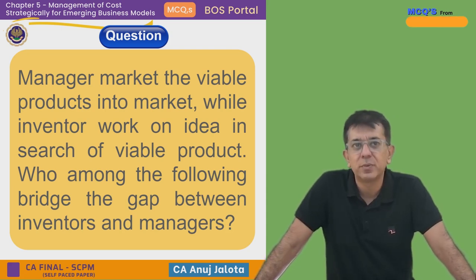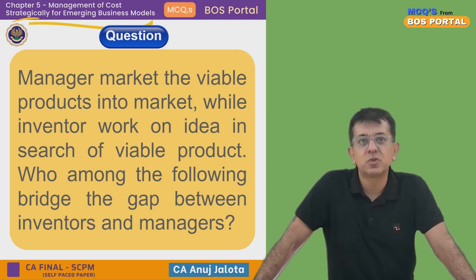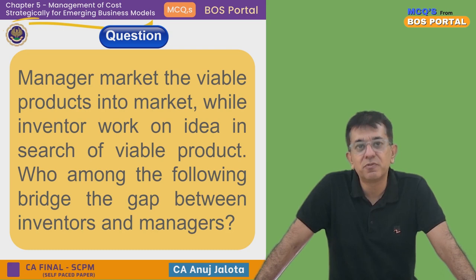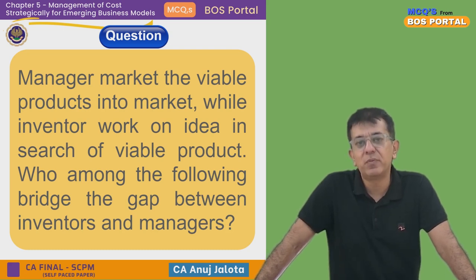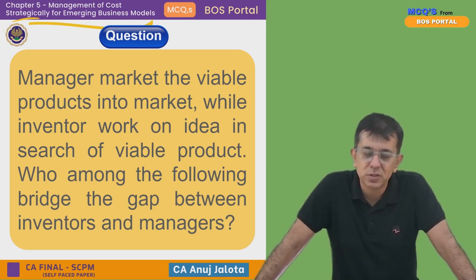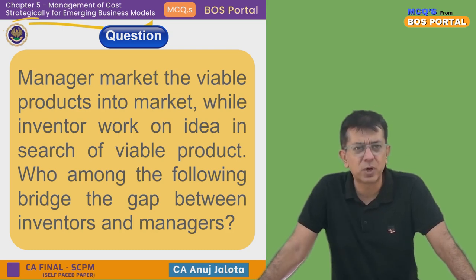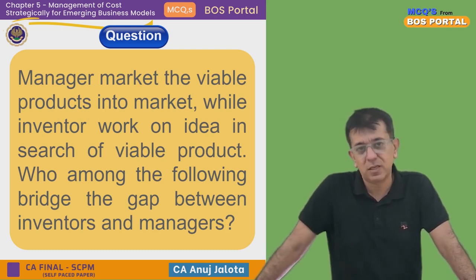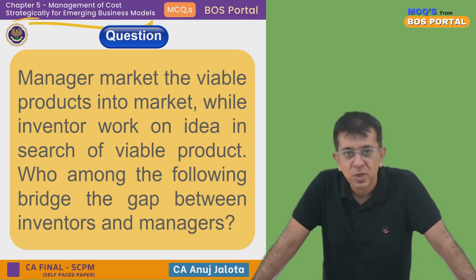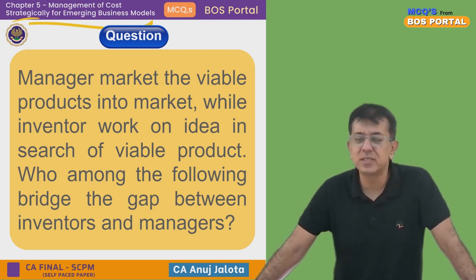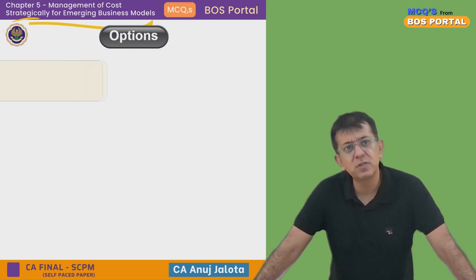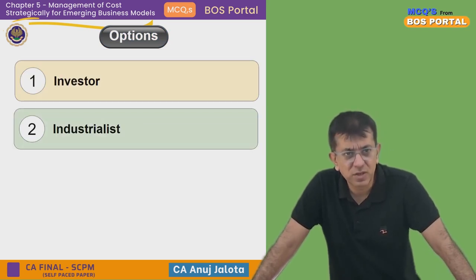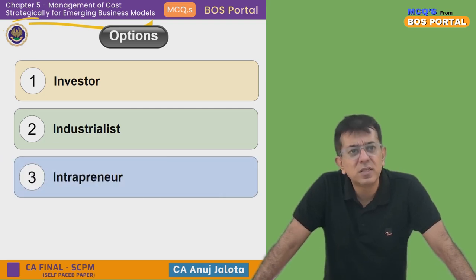Let's do it. Chapter number five: the manager markets a viable product into the market while the inventor works on the idea in search of a viable product. Which among the following bridges the gap between inventors and managers? The four options are: first, investor; second, industrialist; third, intrapreneur; and fourth, entrepreneur.